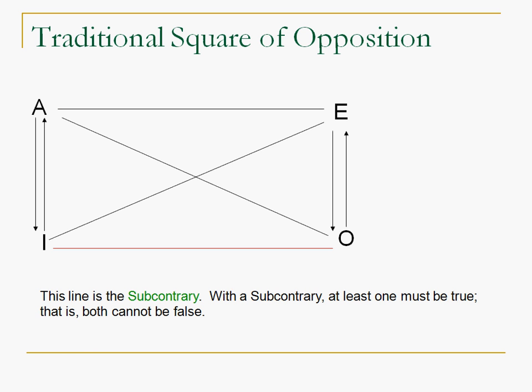All right. The next is the subcontrary. Now, the subcontrary is similar to the contrary, but works differently. With the contrary, both of them cannot be true. With the subcontrary, both cannot be false. All right? So, the subcontrary, if I is true, actually, I and O can both be true. Let me try that again. If I is false, O has to be true.